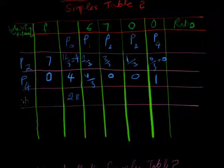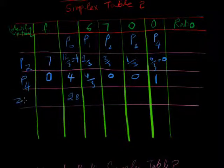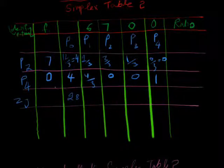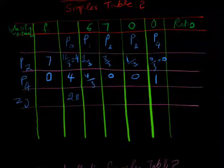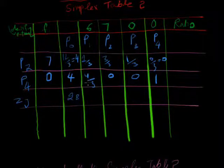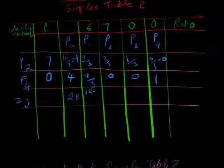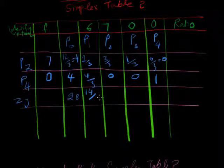This is ZJ. And 7 multiply with 2 divide 3 and 0 multiply with 4 divide 3, and after adding it we calculate 14 divide 3.